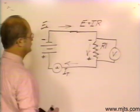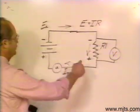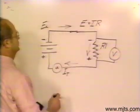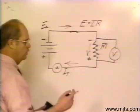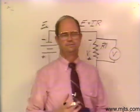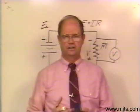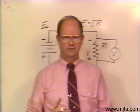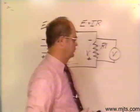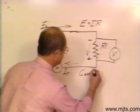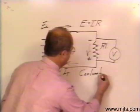Now, current, when we have current flowing through a circuit, we have electrons flowing through the circuit. Now how many electrons would that be? See, there is a term we like to use, a unit of measure we like to use, which is called a coulomb, a coulomb of electrons.